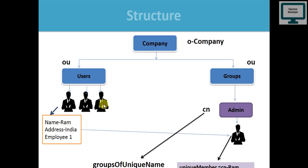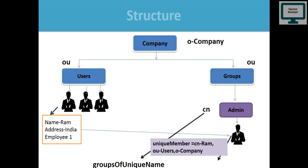In the Users Organization Unit we have people like Ram, Mark, and Sonia — they can be combined into one group. When calling someone by Unique Member, for example Ram: CN=Ram, OU=Users, O=Company. Unique Member means a group of unique names — it always contains a group of unique names. This is the structure you always have to follow.